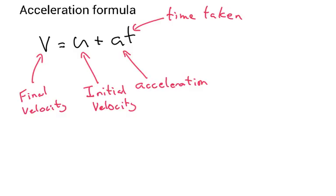I could take my AT and move it over here and I'd end up with V minus AT equals U.